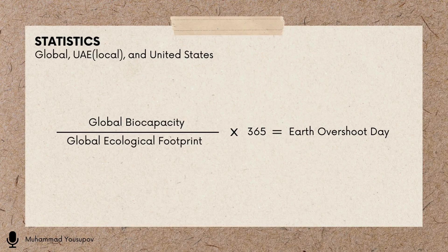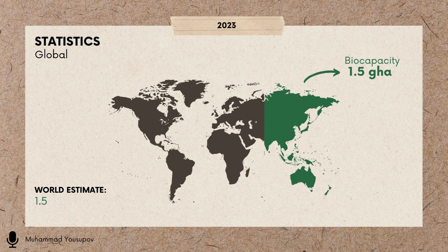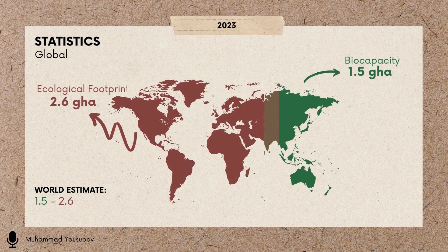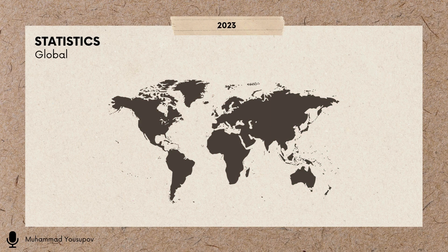Earth Overshoot Day is typically calculated annually based on various factors, including humanity's ecological footprint and Earth's capacity to regenerate resources in a given year. As of 2023, according to the Global Footprint Network, the global biocapacity is 1.5 global hectares per person. However, our global ecological footprint exceeds biocapacity at 2.6 global hectares per person, leaving a deficit of 1.1 global hectares per person. Taking these factors into account, our global Earth Overshoot Day falls on August 2, 2023.